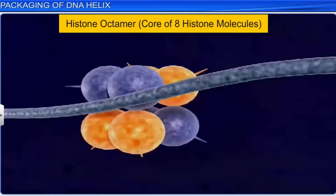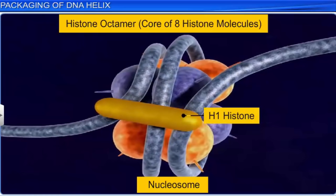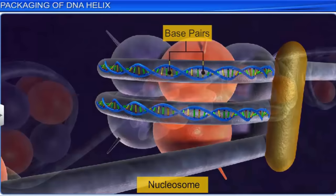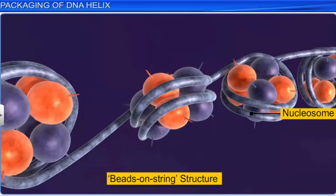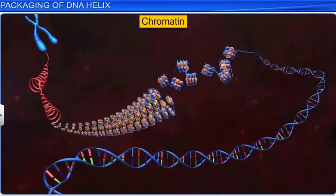Around the positively charged octamer, a negatively charged DNA molecule is wrapped to form a structure known as the nucleosome, which is held in place by the H1 histone. A typical nucleosome has around 200 base pairs of DNA helix. The nucleosomes present in chromatin can be seen as a beads-on-string structure when observed under an electron microscope. It is the nucleosomes that make up the repeating unit in chromatin, the thread-like bodies present in the nucleus.